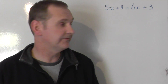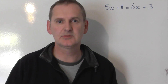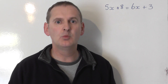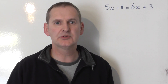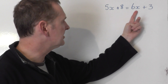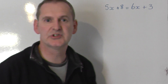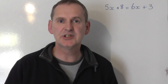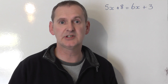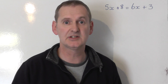How do we solve the equation 5x plus 8 equals 6x plus 3? We ask ourselves the question: on which side of the equal sign has got most x's? You've got 6x's on the right-hand side and 5x's on the left-hand side. Since 6x is greater than 5x, we're going to collect the x's on the side with most x's, which is the right-hand side.